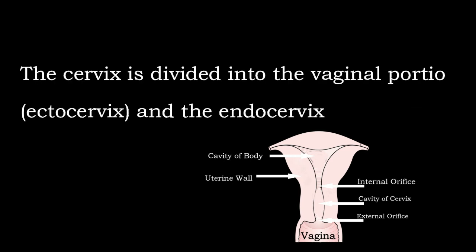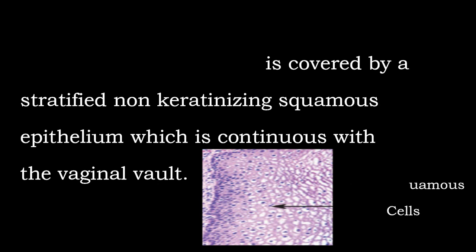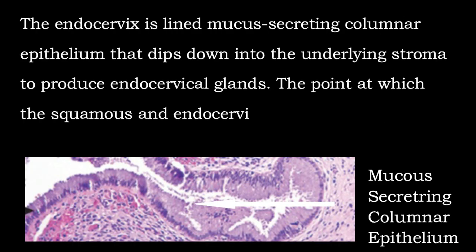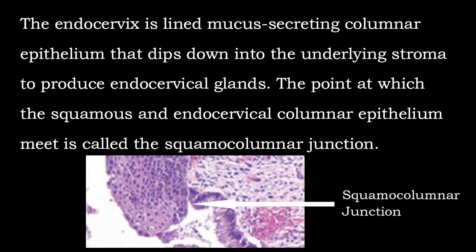The cervix is divided into the vaginal portion, the ectocervix, and the endocervix. The ectocervix is visible to the naked eye on vaginal examination and is covered by a stratified non-keratinizing squamous epithelium, which is continuous with the vaginal wall. This squamous epithelium meets centrally at a small opening termed the external os, leading into the endocervical canal. The endocervix is lined by mucus-secreting columnar epithelium that dips into the underlying stroma to produce endocervical glands.